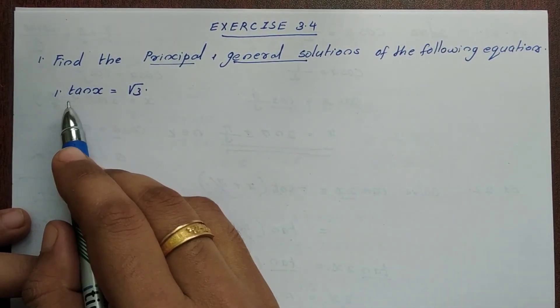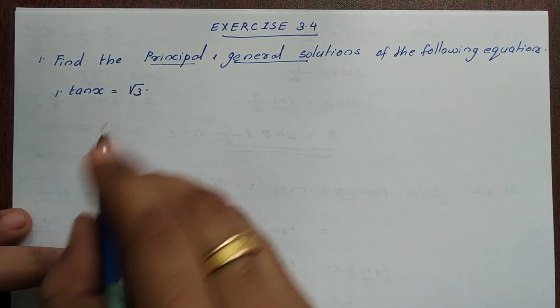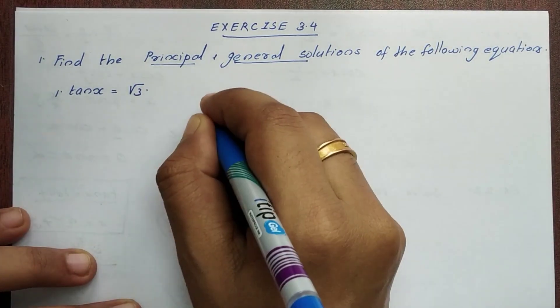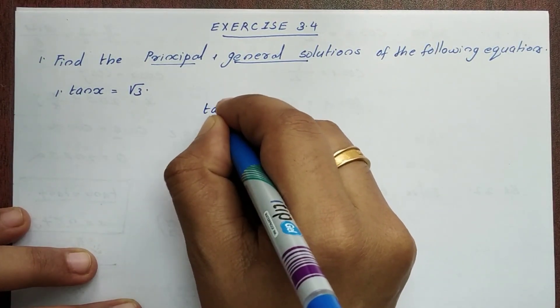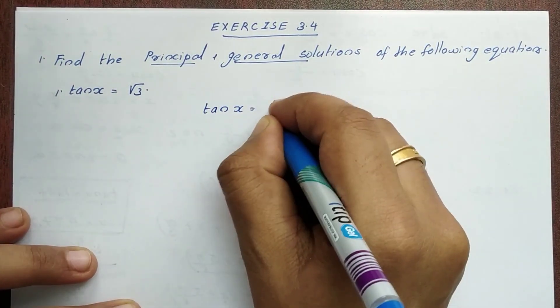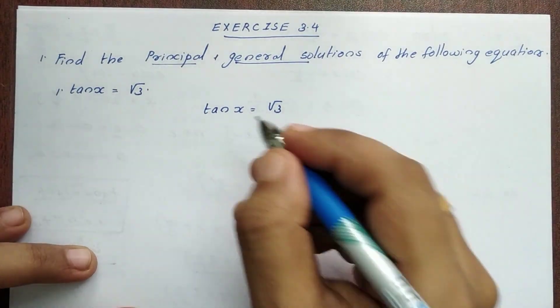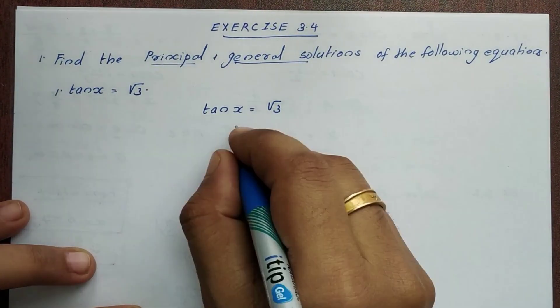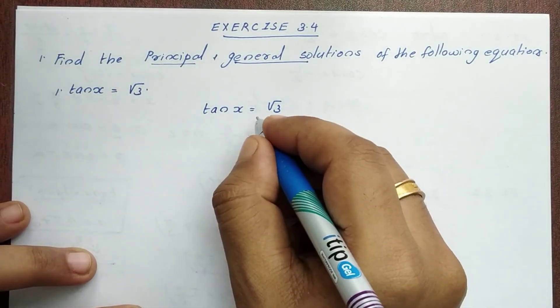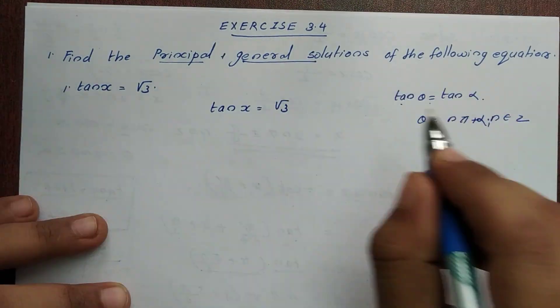First question: tan x is equal to root 3. So what do we know? Tan x is equal to root 3.